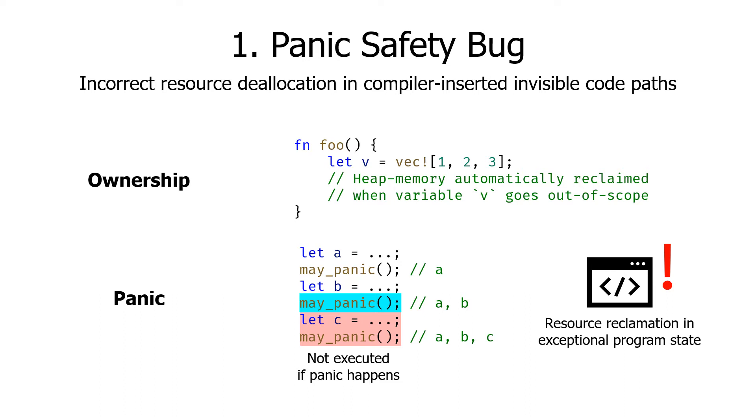The second concept is panic. Panic is used to handle exceptional program status in Rust. When panic happens, the Rust runtime unwinds the call stack and calls the destructors on each live variable. For instance, if the blue line panics, the red lines are not executed, and the Rust compiler calls destructors on live variables A and B.